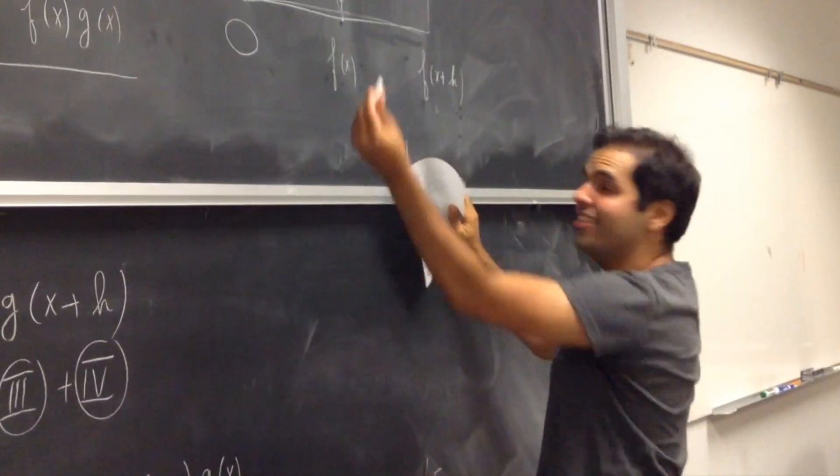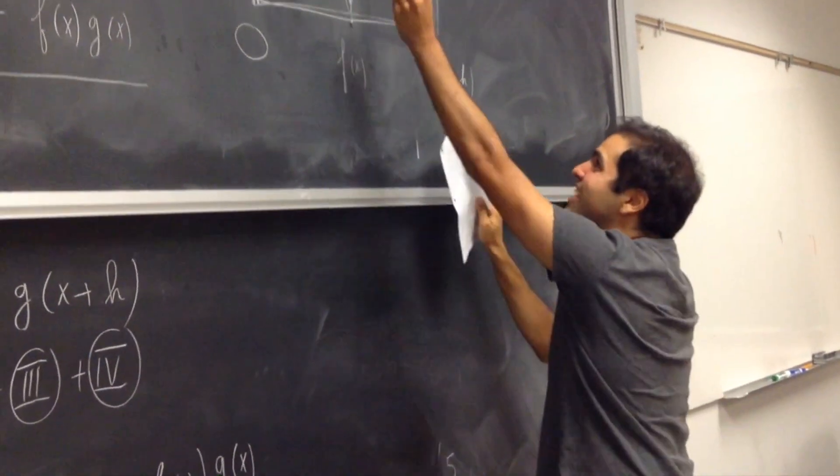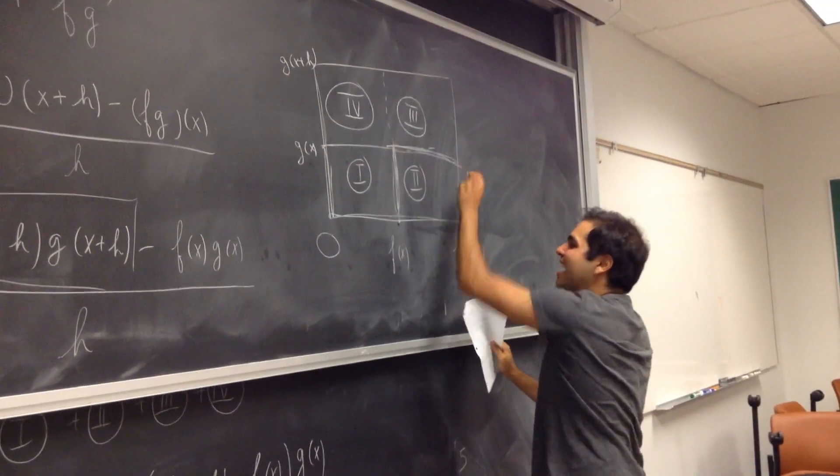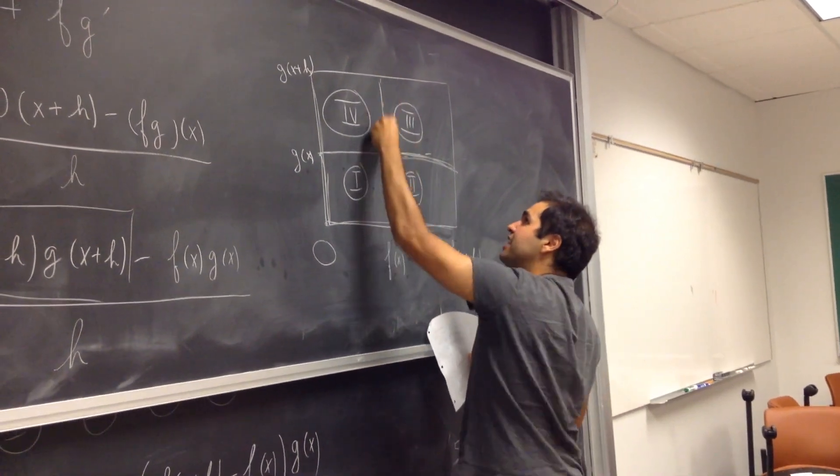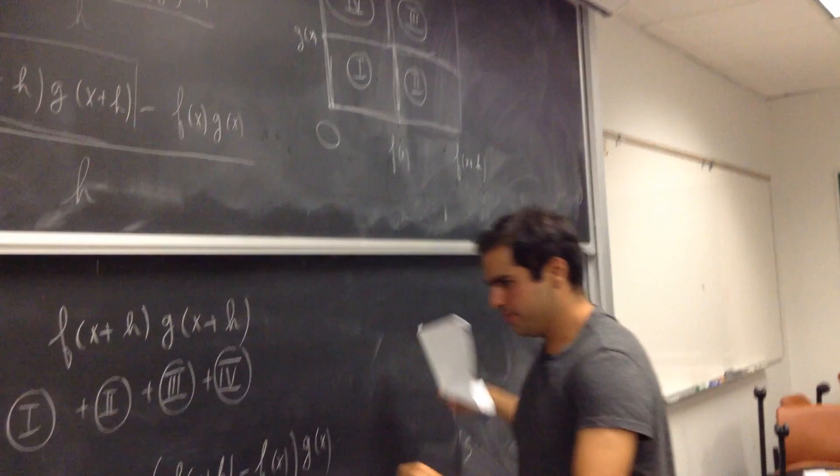For the third one, the base - it's all about the base - is f of x plus h minus f of x, and the height is g of x plus h minus g of x.